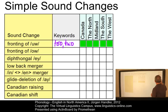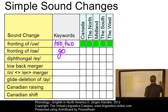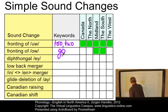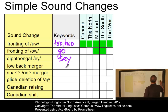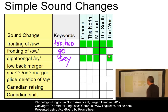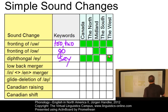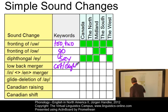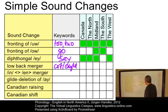The second change is the fronting of O in keywords such as 'go,' and we find that this feature is primarily realized in the Midland and in the South. Diphthongal A in words such as 'say' can be found in a large number of varieties — in Canada, the North, the Midland, and the West, but not the South. Very prominent is the low back merger in words such as 'cot' versus 'caught,' where the two low back vowels O and O merge to become identical, especially in the Canadian dialect and in the West.